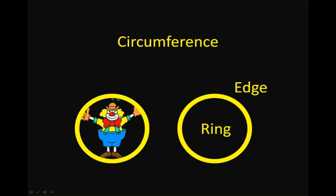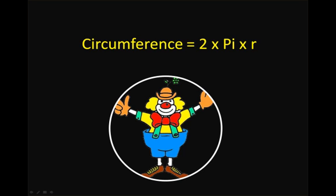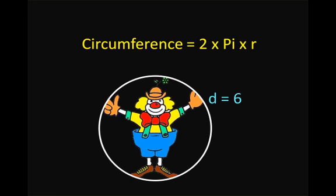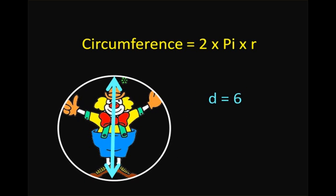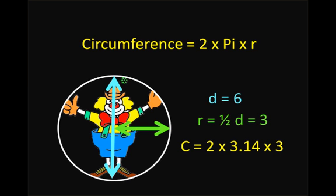Let's take a look at our circumference — remember, that is the edge of the ring. The circumference is 2 times pi times r. That's our equation for the circumference. If we give our diameter a value of 6, the radius is one half of the diameter, so one half of 6 is 3, giving us a radius of 3. Applying the formula: circumference equals 2 times 3.14 times 3, which gives us a value of 18.84.